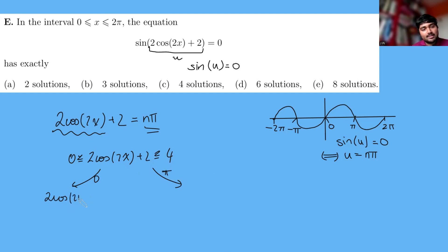And obviously 2 pi is too big and minus pi is negative, so there's two possibilities here. Either we have 2 cos 2x plus 2 is 0, in which case cos 2x is just minus 1. What about if 2 cos 2x plus 2 is pi? If we rearrange that, we get cos 2x is pi minus 2 over 2. So we've got two different possible values that cos 2x can take.